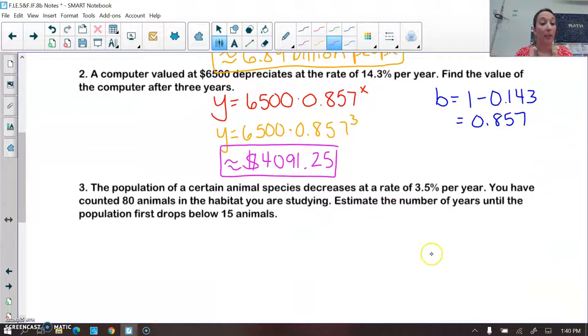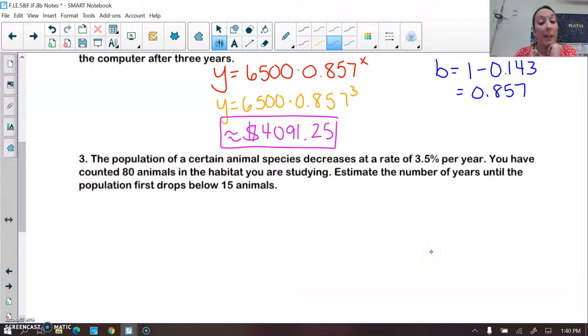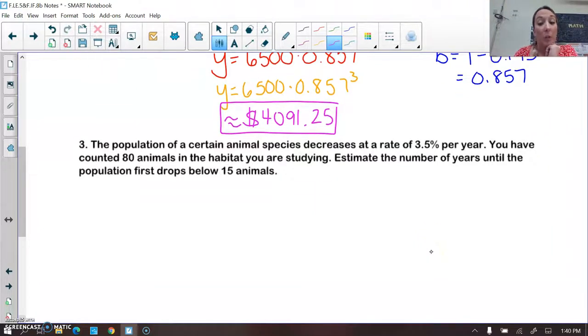And then the last problem. The population of a certain animal species decreases at a rate of 3.5% per year. You have counted 80 animals in the habitat you are studying. So your exponential function would be y is equal to 80.